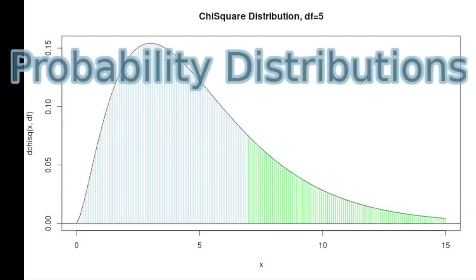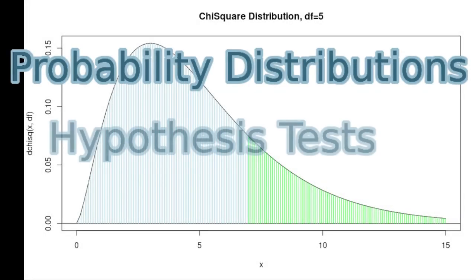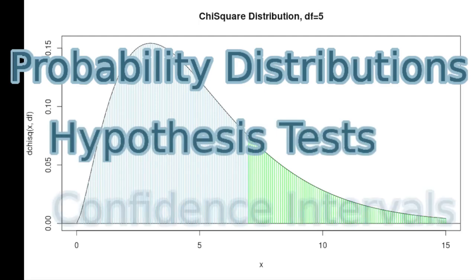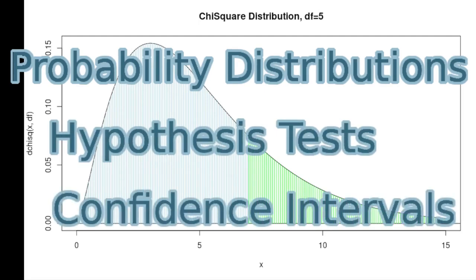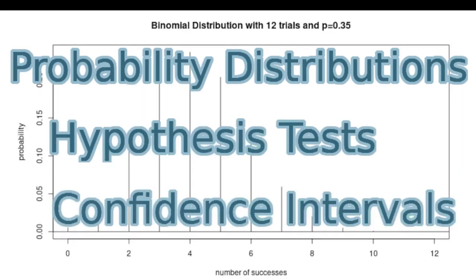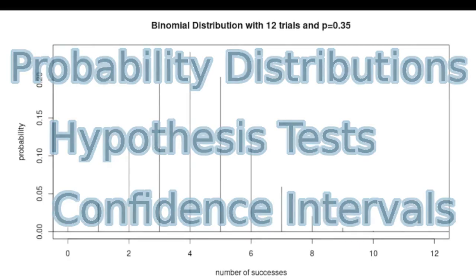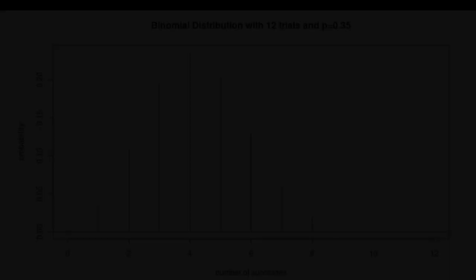During this semester we used probability distributions to run hypothesis tests and to calculate confidence intervals. We've used seven probability distributions this semester, let's look at them quickly.